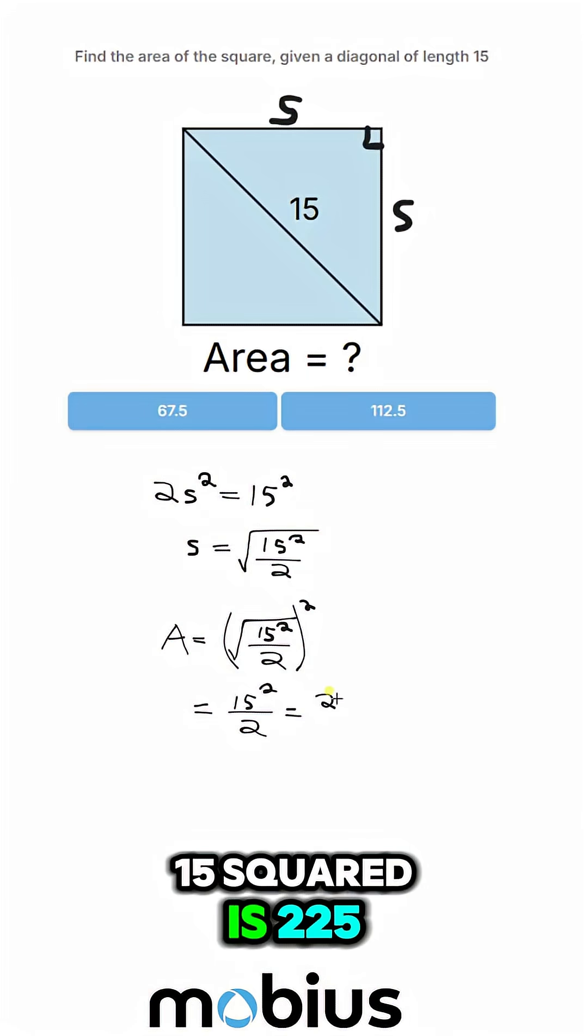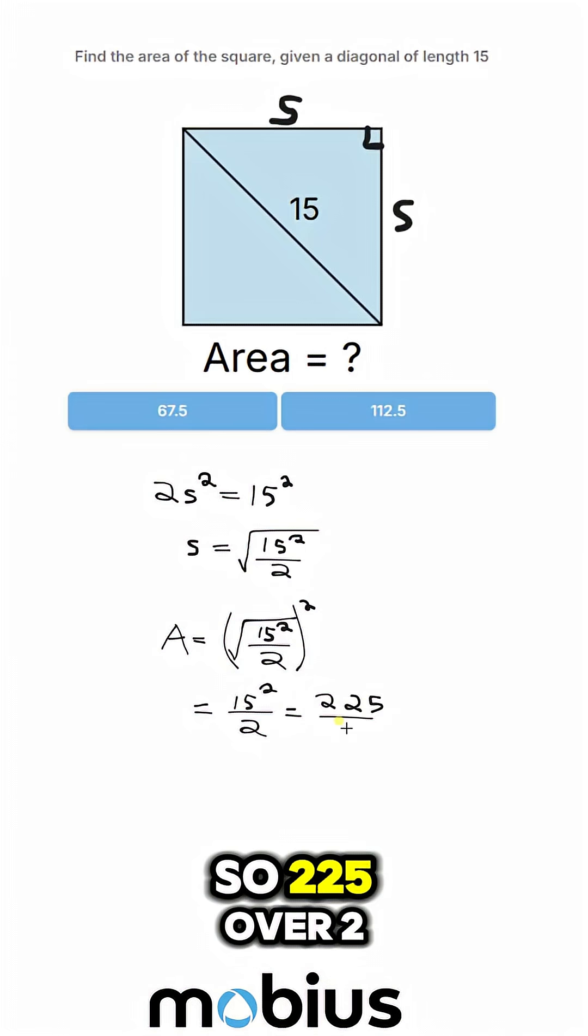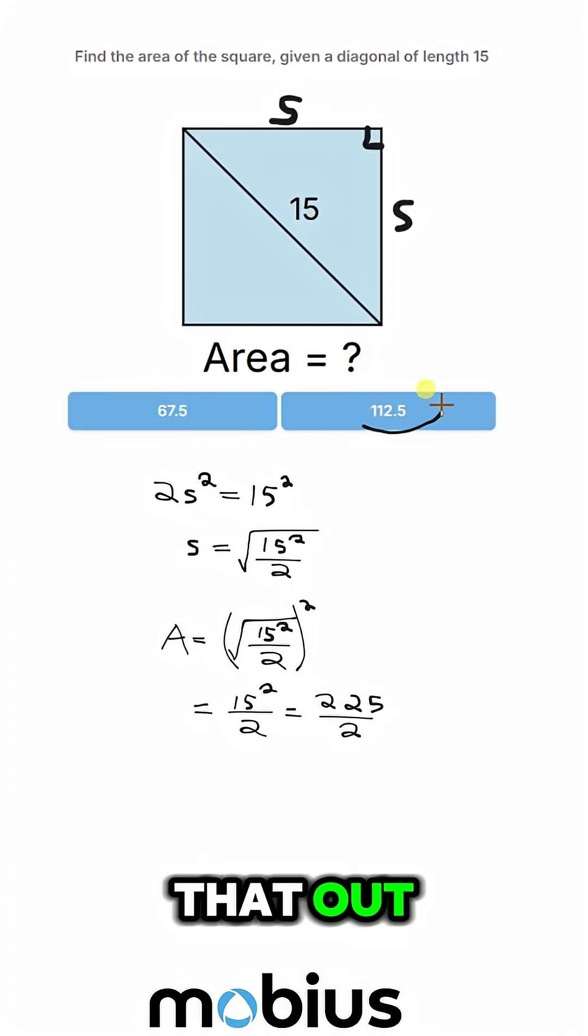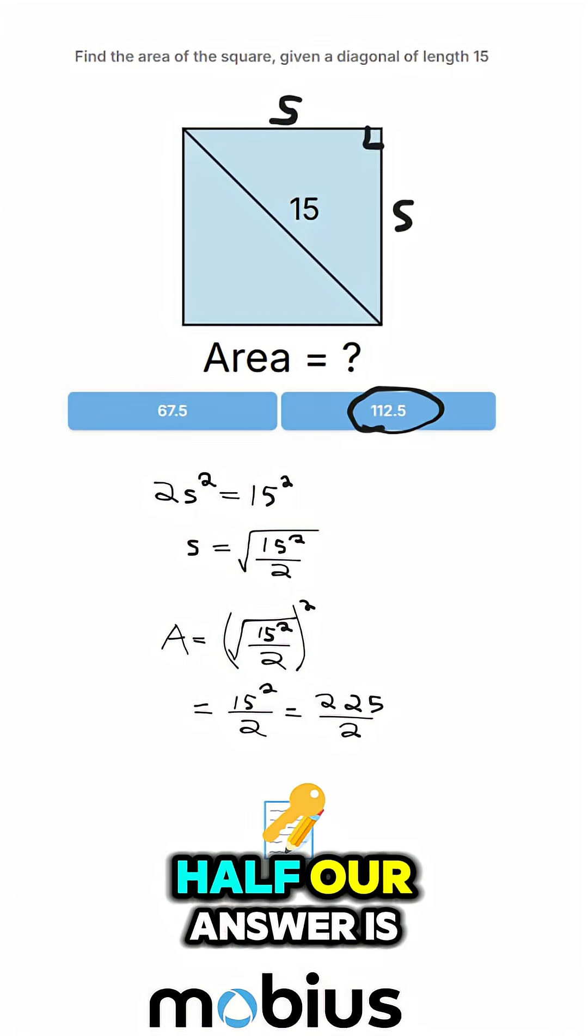15 squared is 225. So 225 over 2. And if we divide that out, that's 112 and a half. Our answer is right there.